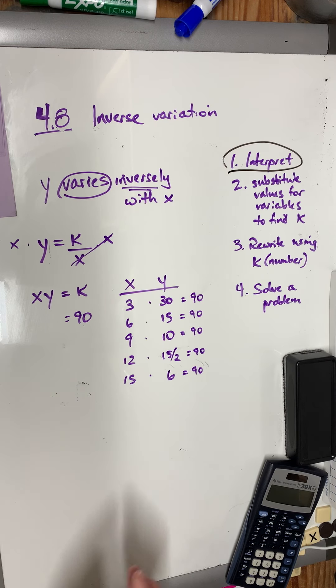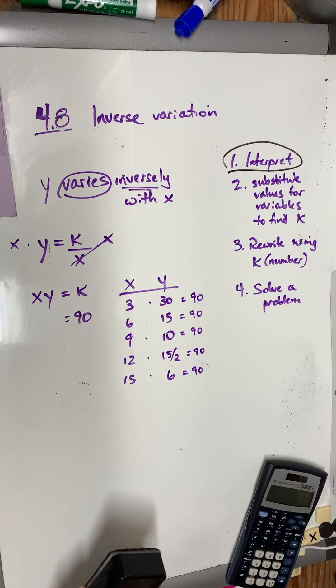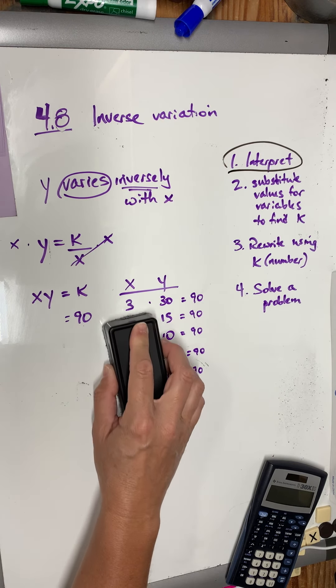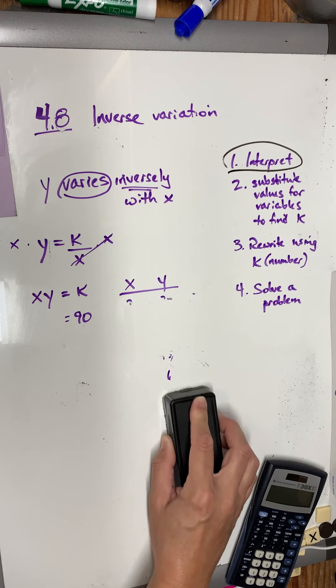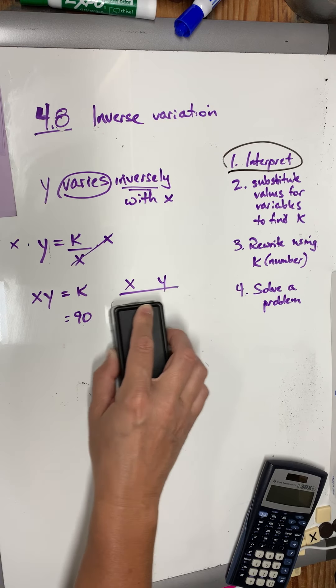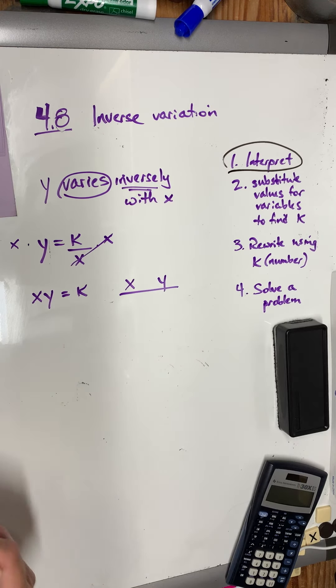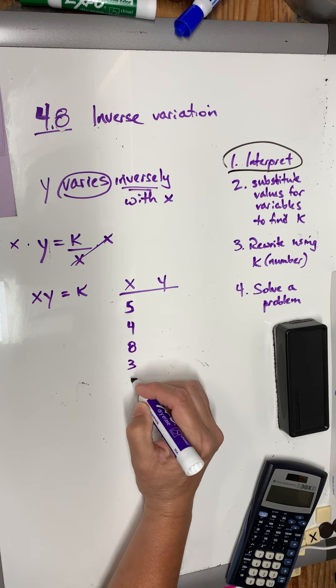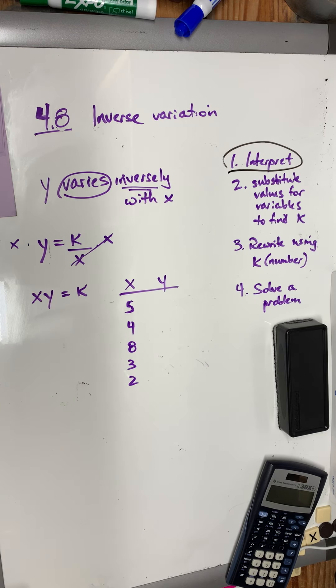Let's look at question number 2. We've got the same setup, y varies inversely with x. So, what we need to do is multiply the list and see if everything gives the same answer. So, for x, I have 5, 4, 8, 3, 2. And for y, I have 2, 3, 8, 4, 5.